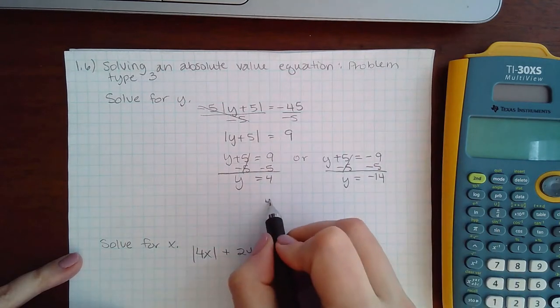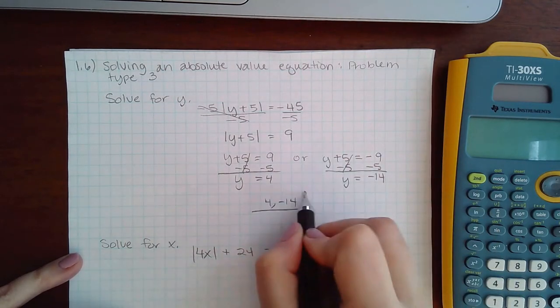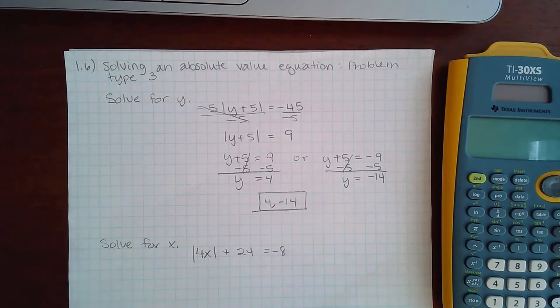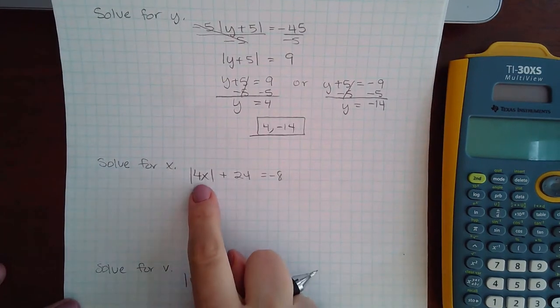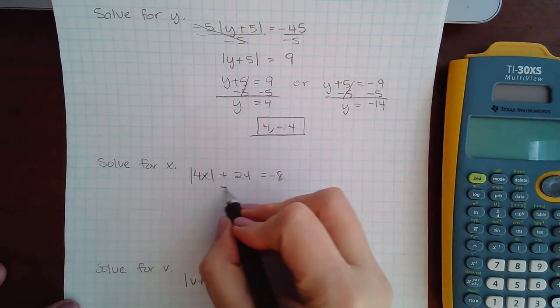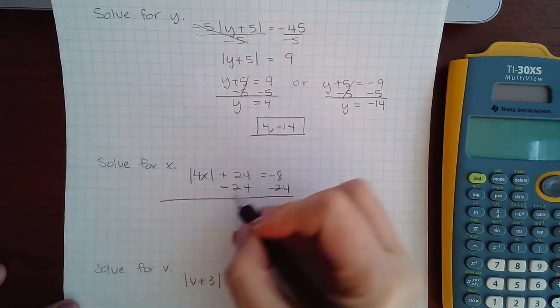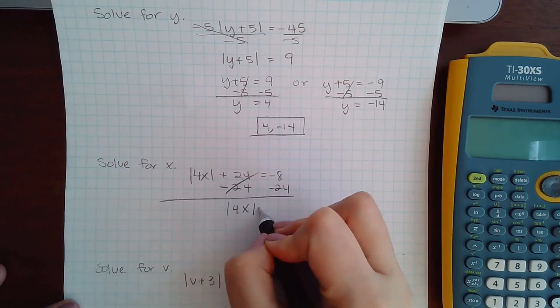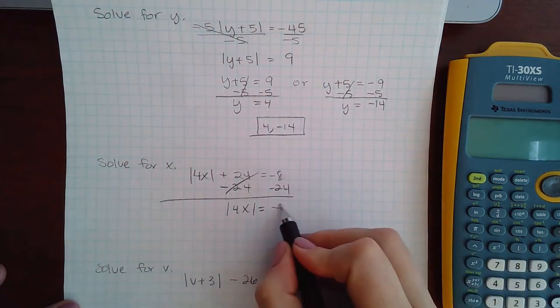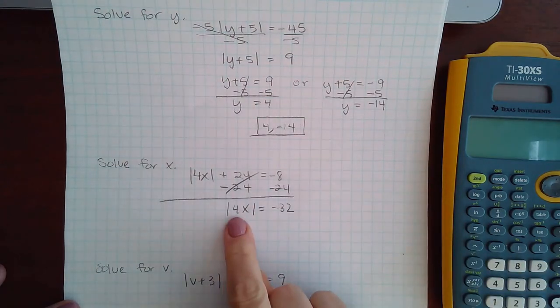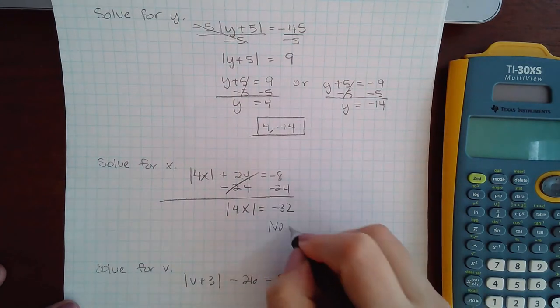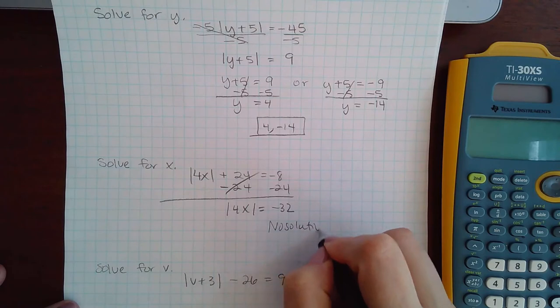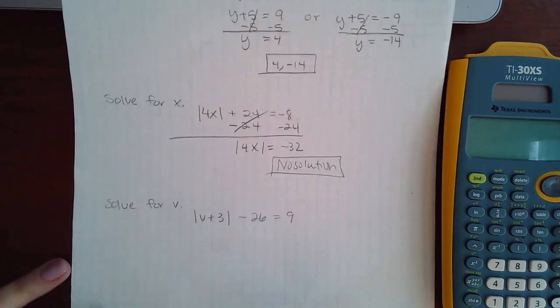And so I have two answers: 4 and negative 14. Now in this expression, I need to isolate the absolute values, so I need to subtract 24 on both sides. When I do that, I get negative 32. An absolute value bar can never be a negative, so in this case the answer would be no solution.